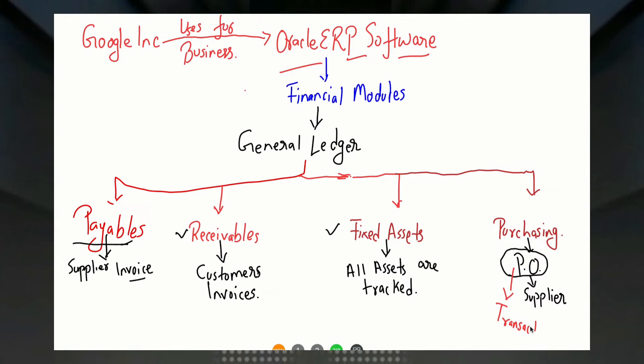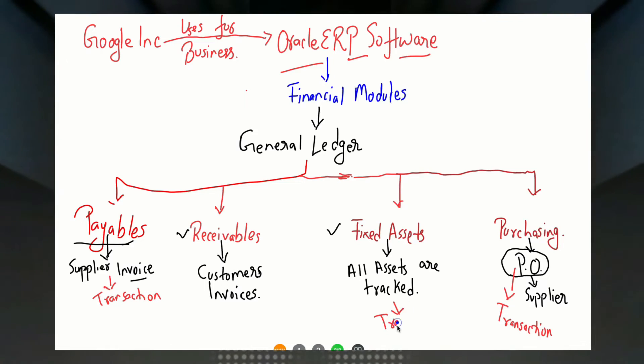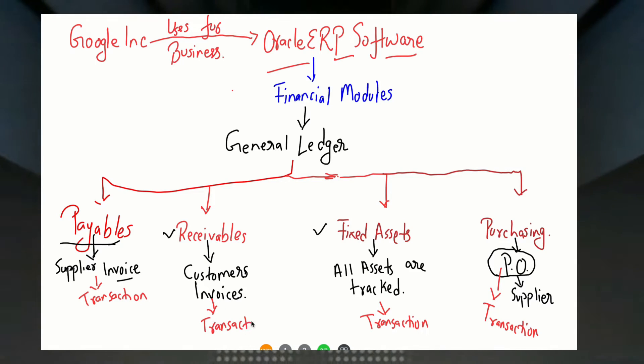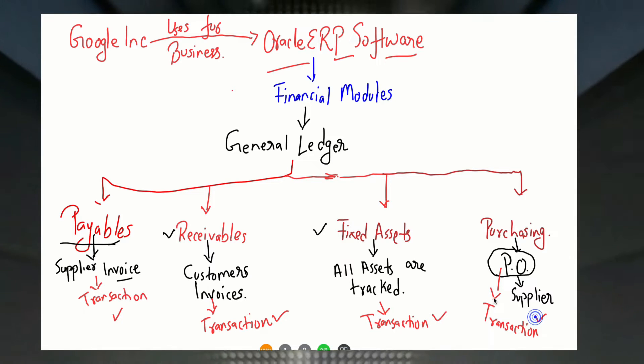Now, whatever transactions are done in these modules are captured in the respective module. For example, a purchase order is created in the purchasing module, supplier invoices are recorded in the payables module, fixed assets are captured in the fixed assets module, and customer invoices are recorded in the receivables module. So you see there are different transactions happening in each module.